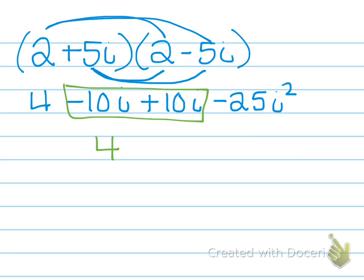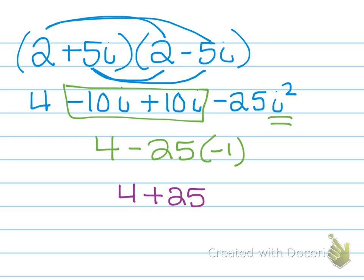We're left with 4 minus 25, except that i squared becomes negative 1. So our final answer is 4 plus 25, which gives us 29. By multiplying a complex number by its conjugate, it cancels out and gets rid of the imaginary part.